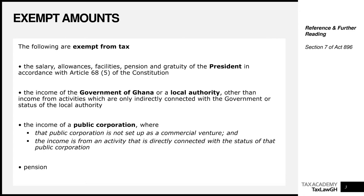For example, if a local authority in charge of the environment starts renting out buses and making rental income, that income is not in the nature of that local authority and will not enjoy this exemption. Take note: the Government of Ghana and local authorities are exempt only to the extent that the income relates to their status as a government or local authority.